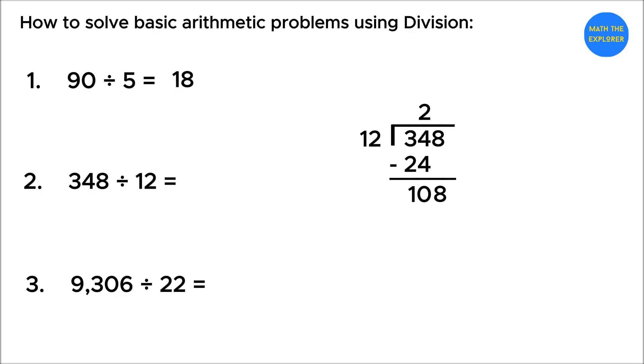12 goes into 108 nine times, so write 9 next to the 2 on top. Multiply 9 times 12 is equal to 108, and subtracting gives a remainder of 0. Therefore, the final answer to 348 divided by 12 is 29.